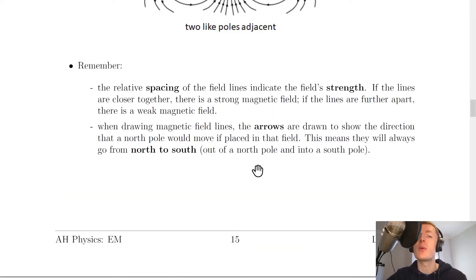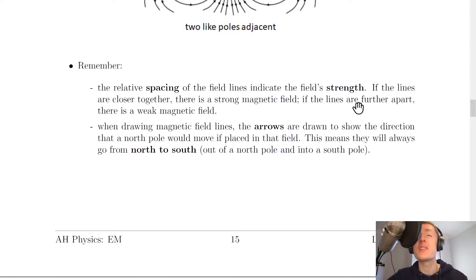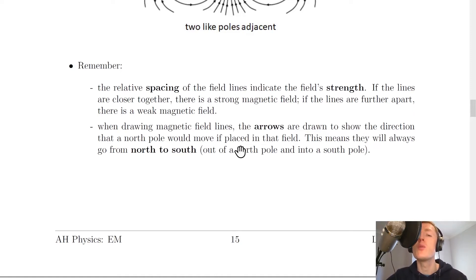Just some rules to remember when drawing magnetic field lines. The relative spacing of the field lines indicates the field's strength — if the lines are closer together there is a strong magnetic field, whereas if the lines are further apart there is a weak magnetic field. This is similar to the rule for electric field lines. Also, the arrows are drawn to show the direction that a north pole would move if placed in that field, meaning they will always go from north to south — out of a north pole and into a south pole.